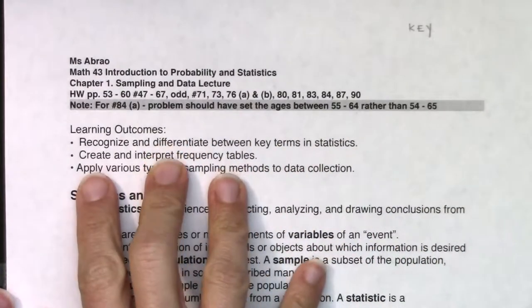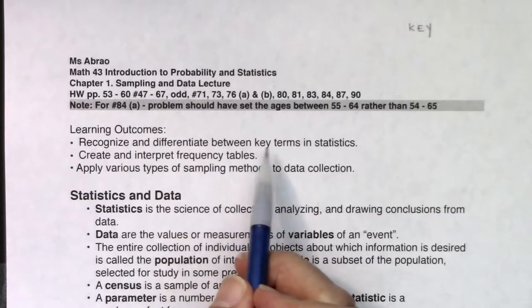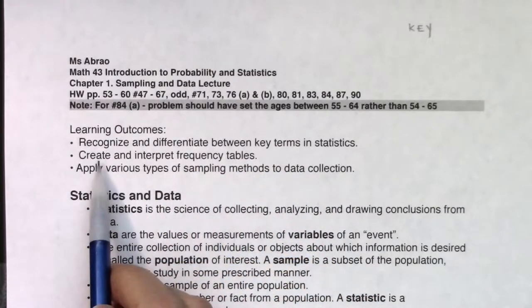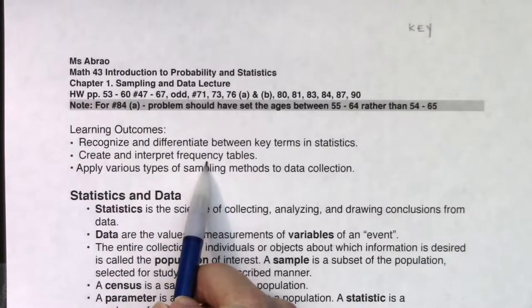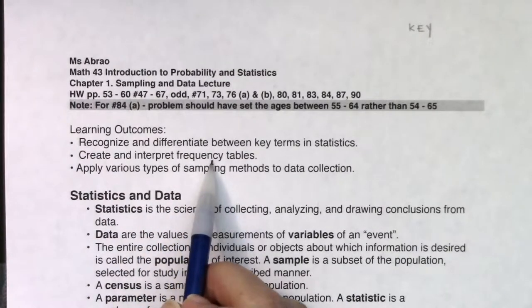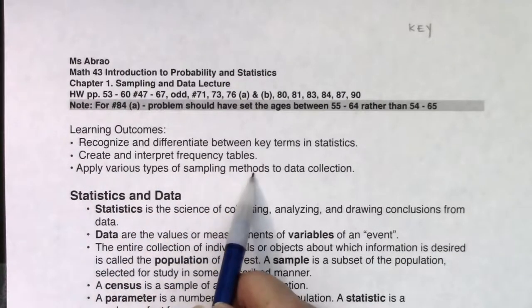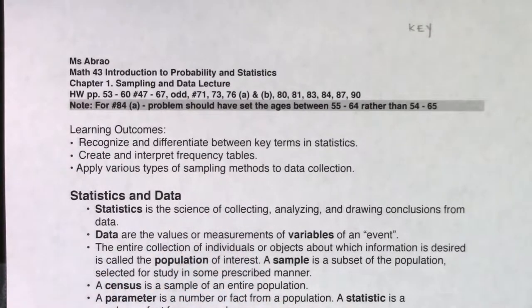By the end of this chapter, you're going to pick up a bunch of vocab, so I will want you to recognize and differentiate between key terms in statistics. So like I said, a bunch of vocab. We're going to create and interpret frequency tables, whether that's frequency in and of itself or relative frequency, and we're also going to learn about various types of sampling methods. There's five types that we're going to take a look at in this course.